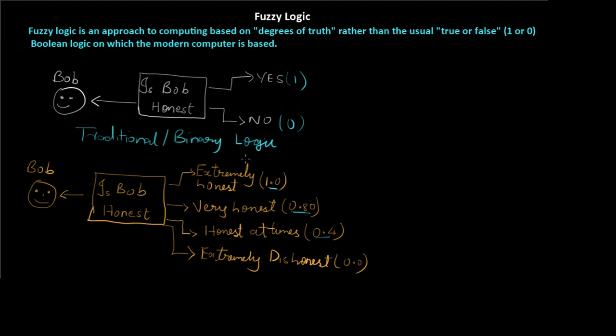Fuzzy logic operates on the concept of membership and degree of membership which ranges from 0 to 1. It depends on a membership function. In this case, is Bob honest can be considered as a membership function with these as his different membership values.